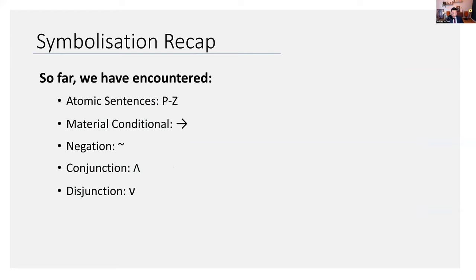Let's do some recap. We've got a few minutes left, and I think we'll break for the day, but let's recap. We've encountered atomic sentences P to Z, the material conditional, the negation, the conjunction, and the disjunction, which is inclusive.